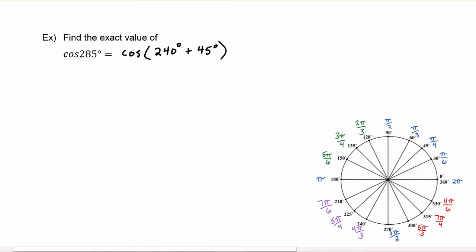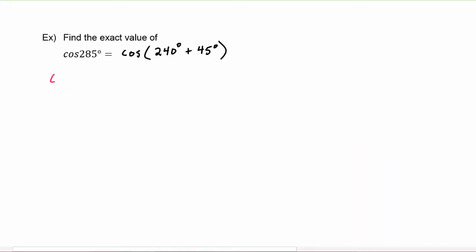Or you may have chosen to do 135 degrees plus 150 degrees — that adds up to 285 — or maybe 225 degrees plus 60 degrees. Any option that involves using the special angles that add up to 285 will give you the same answer. It might look a little different in your worked-out solutions because you picked different angles, but your final answer will be the same. We know this is an application of the identity for cosine of A plus B: cosine A cosine B minus sine A sine B.